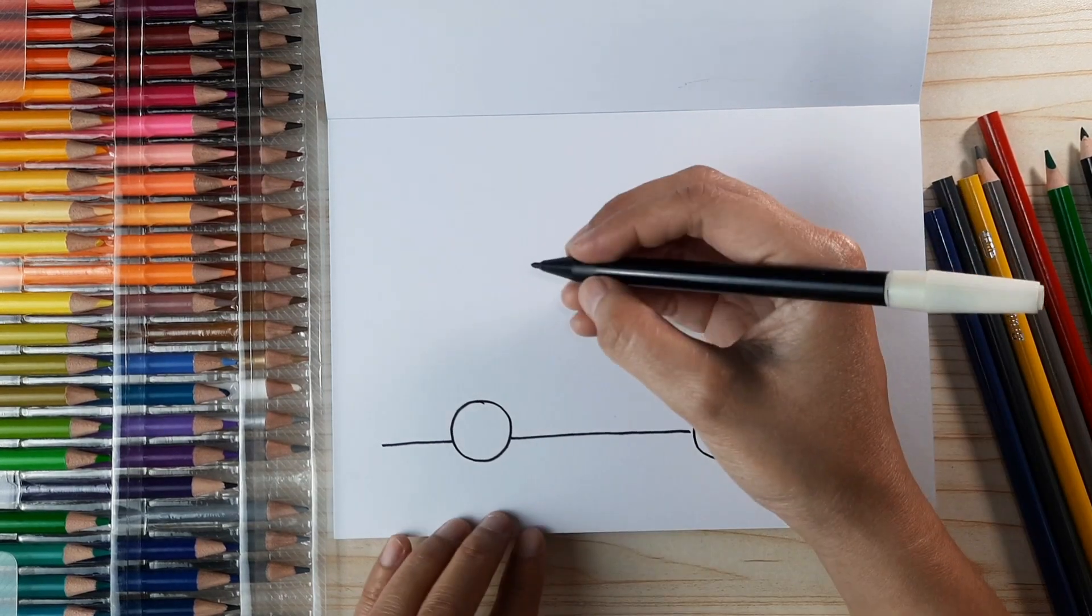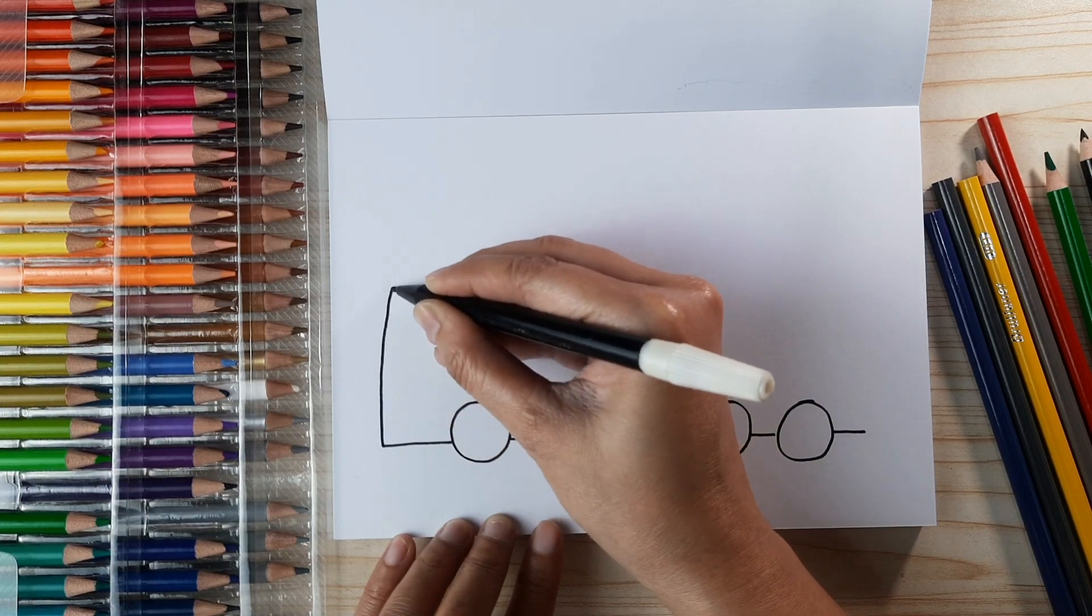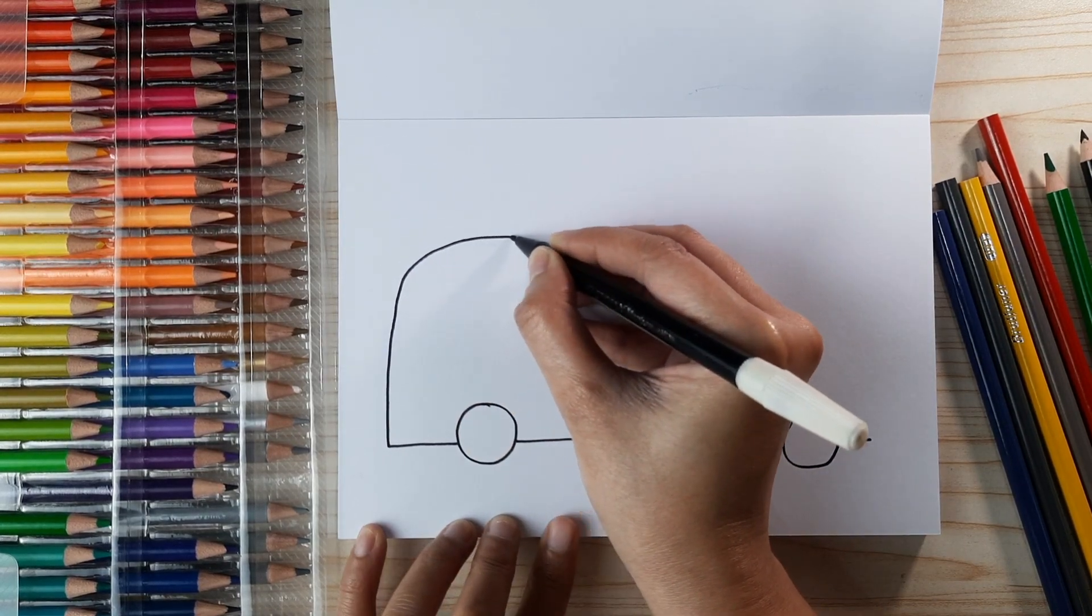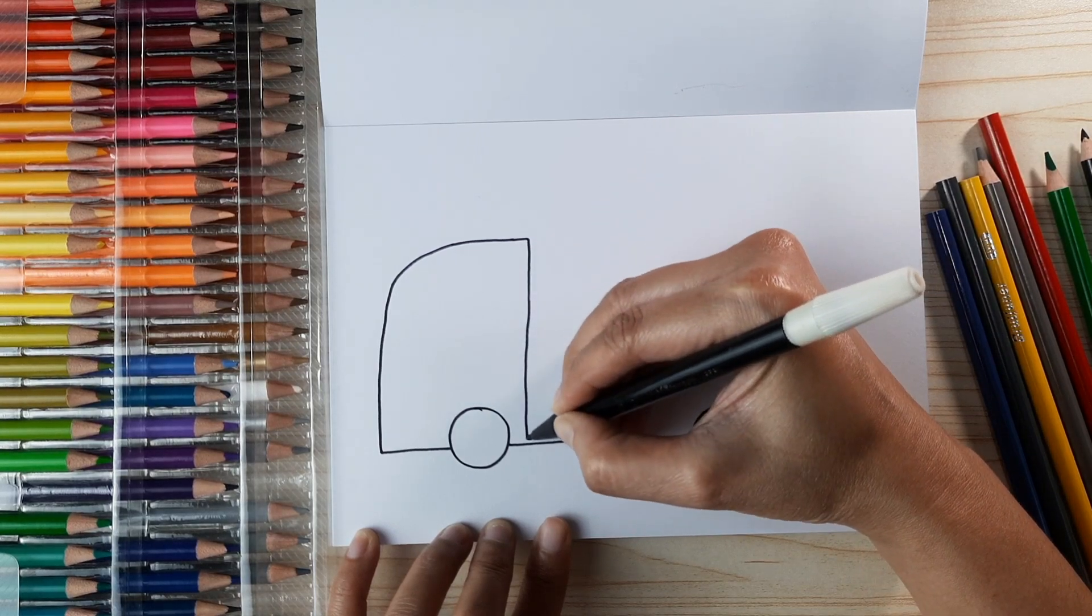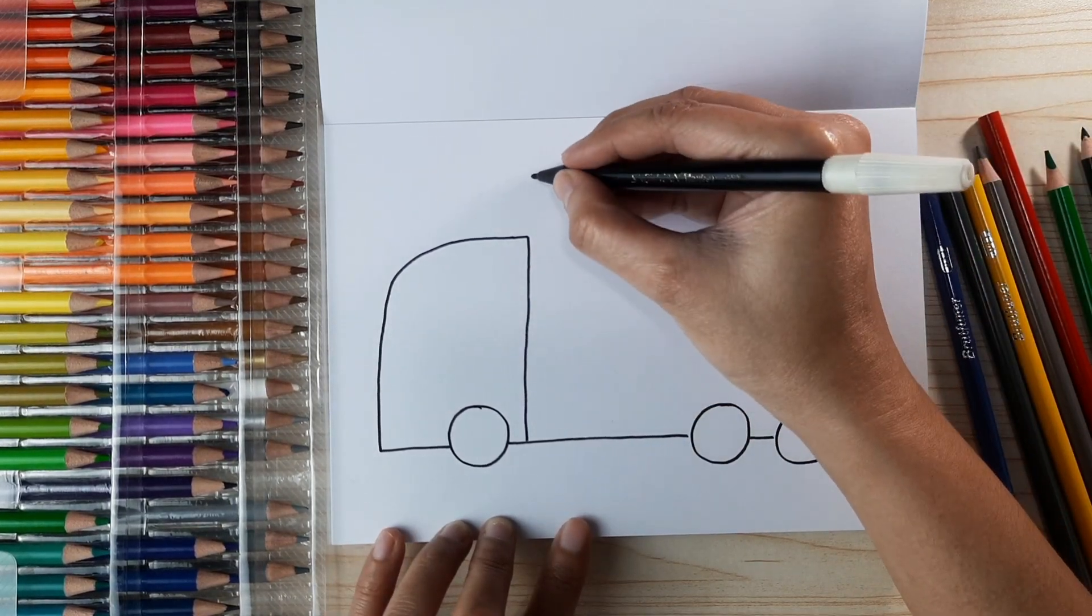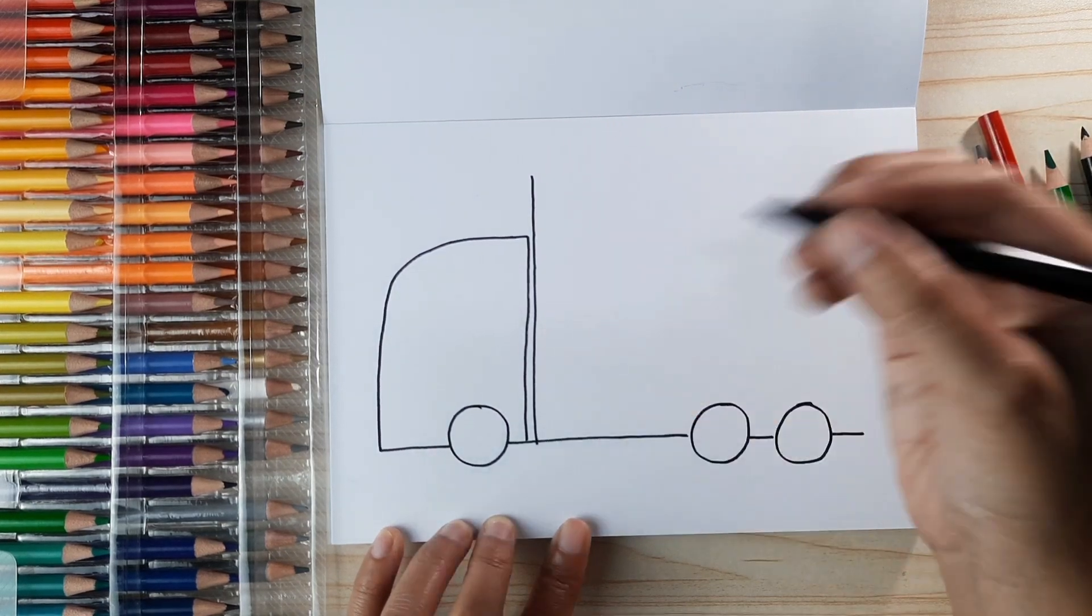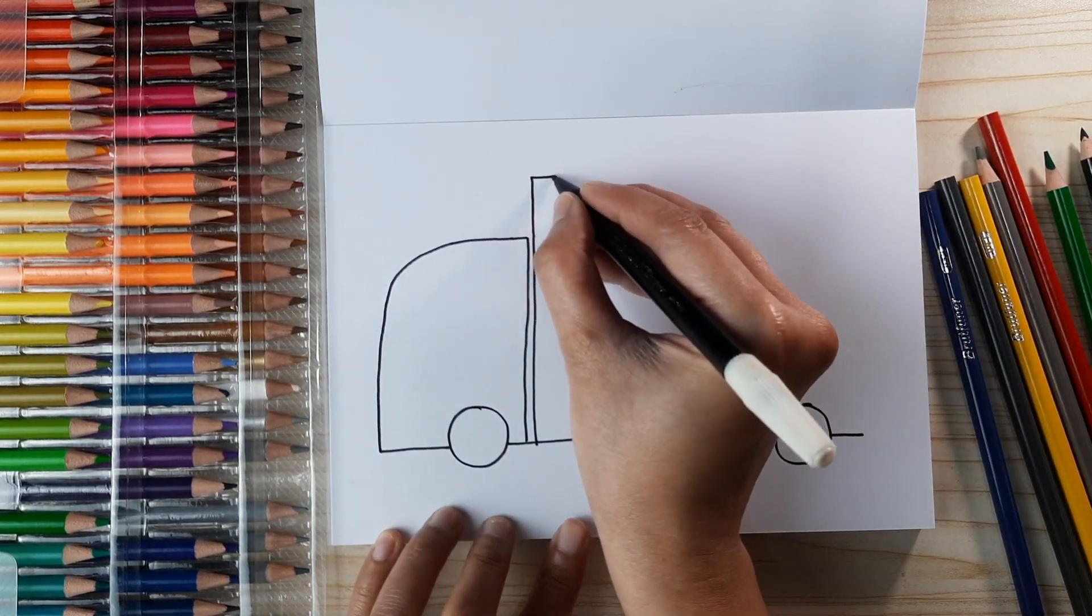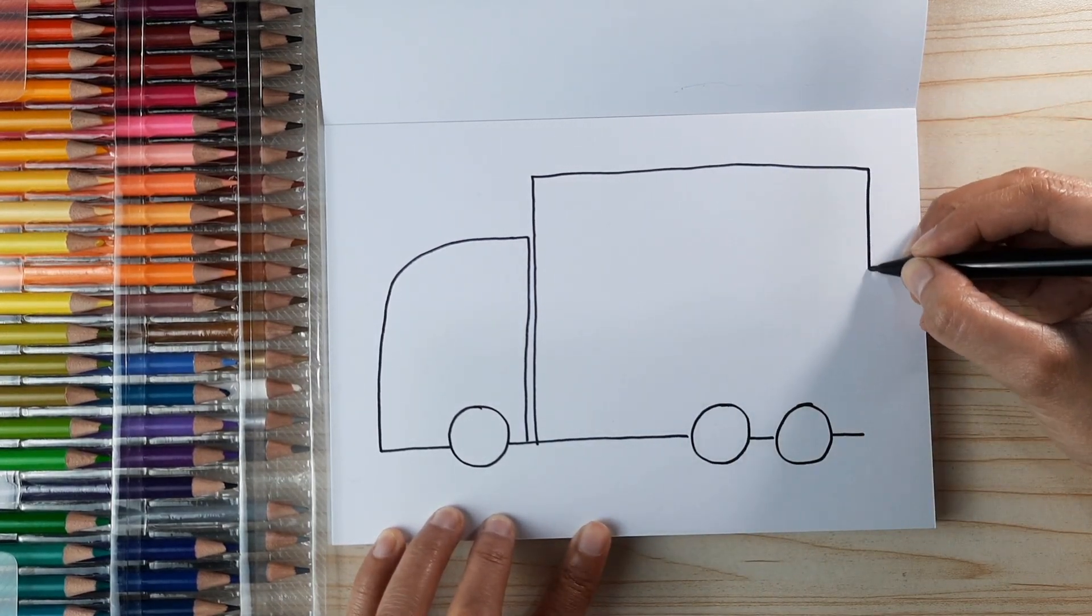Let's start with drawing the front of the truck like this and then go down. Draw a rectangle as the container, go down to the right and go straight down.